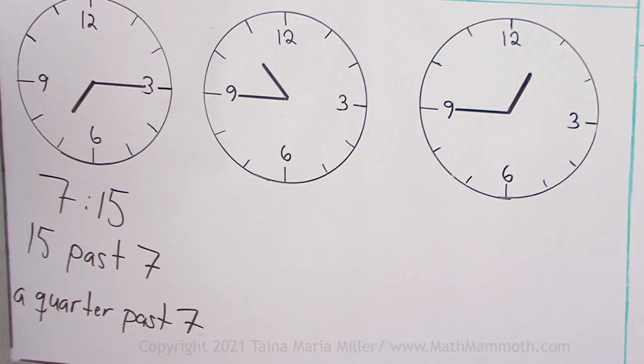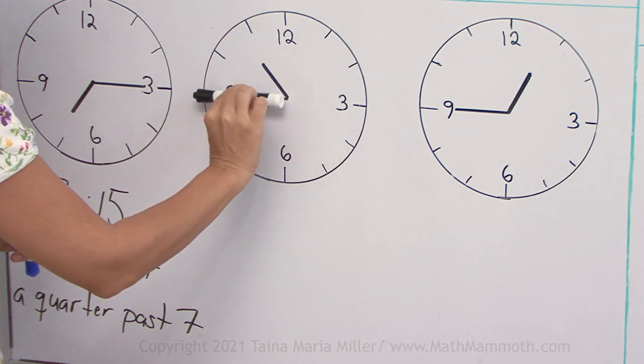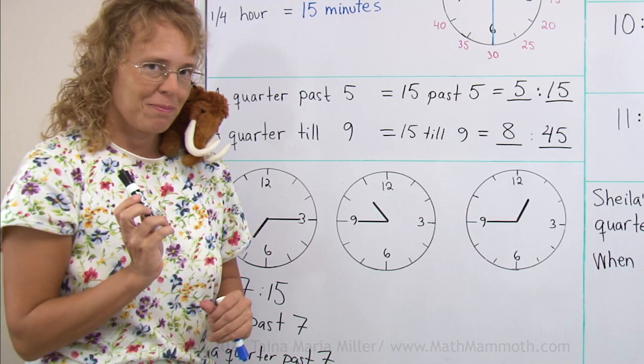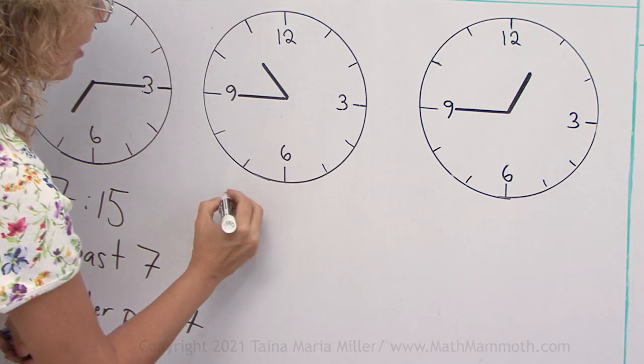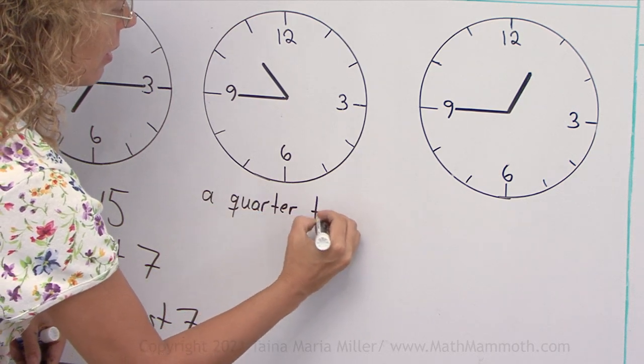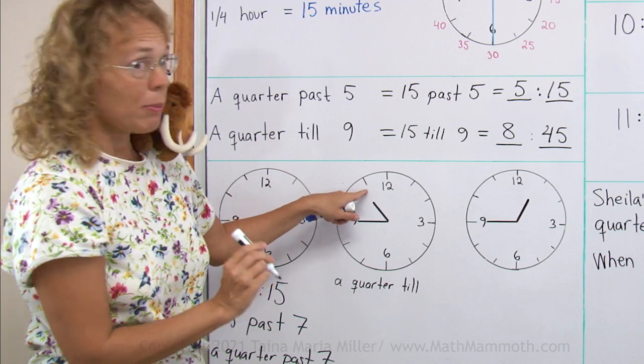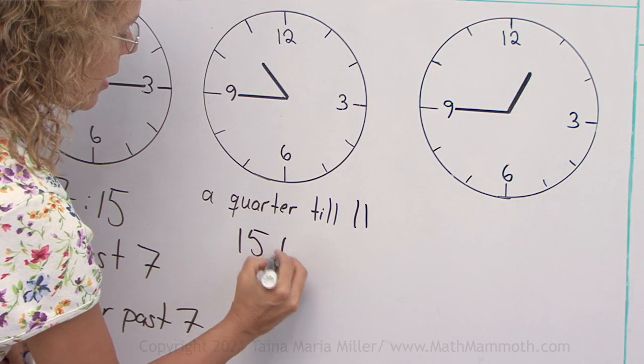How about here? What time is it? Now you can see the minute hand has exactly 15 minutes to go till the next hour. So that makes a quarter till something. Let me write here, a quarter till, till what hour? The hour hand is soon going to be at 11. It is the same as 15 till 11.